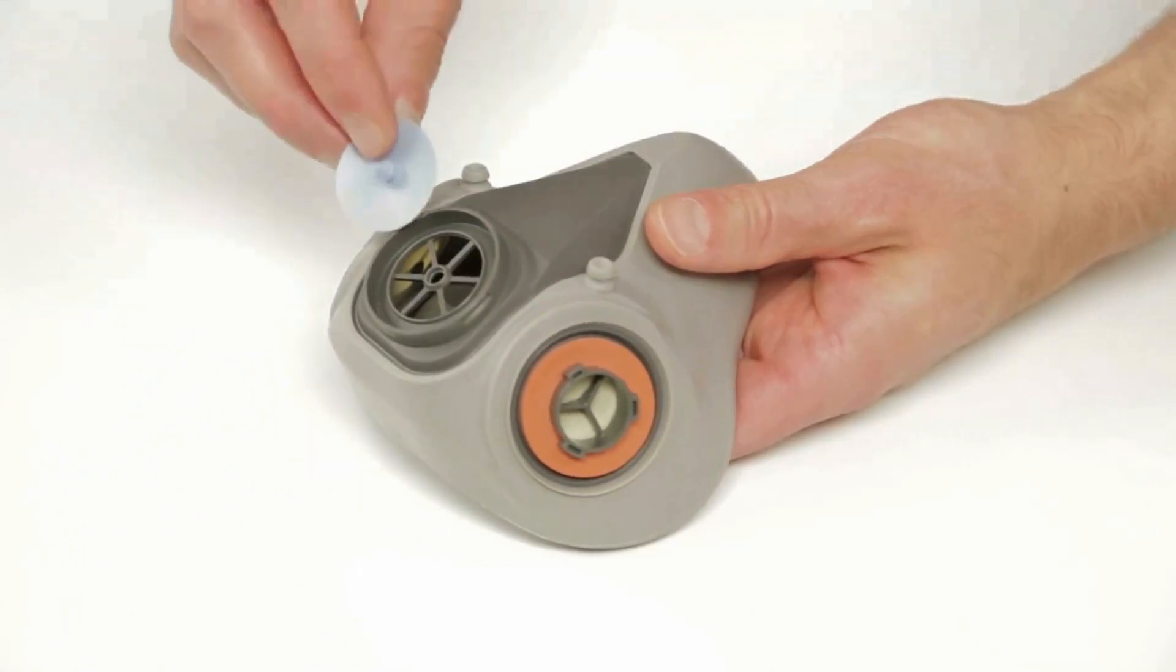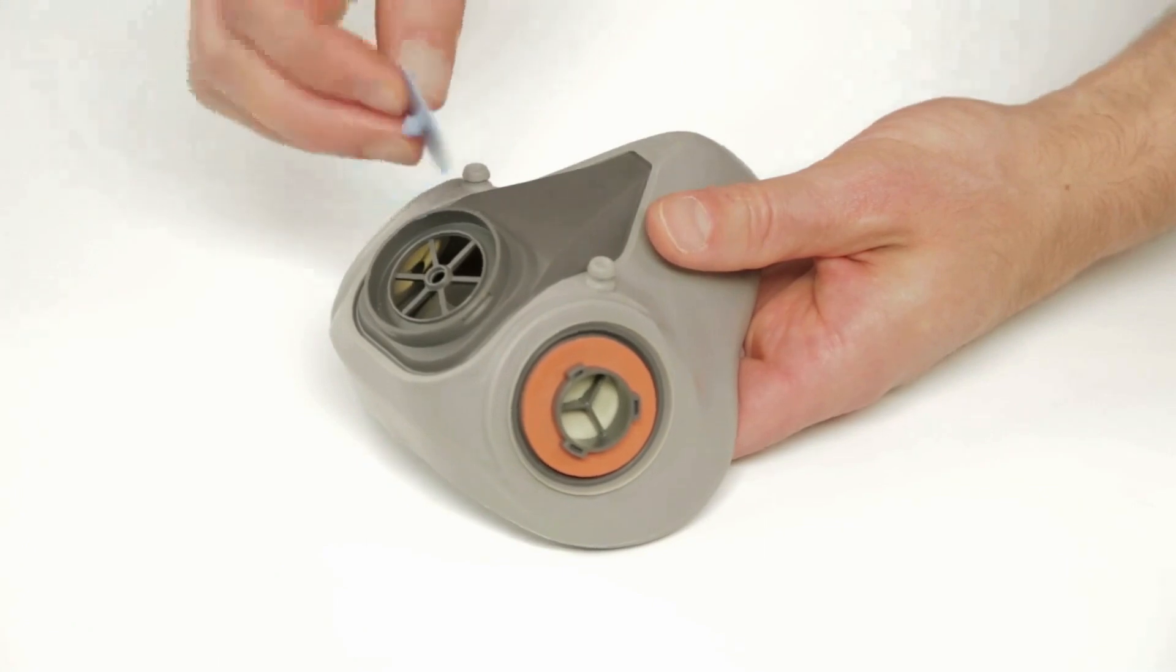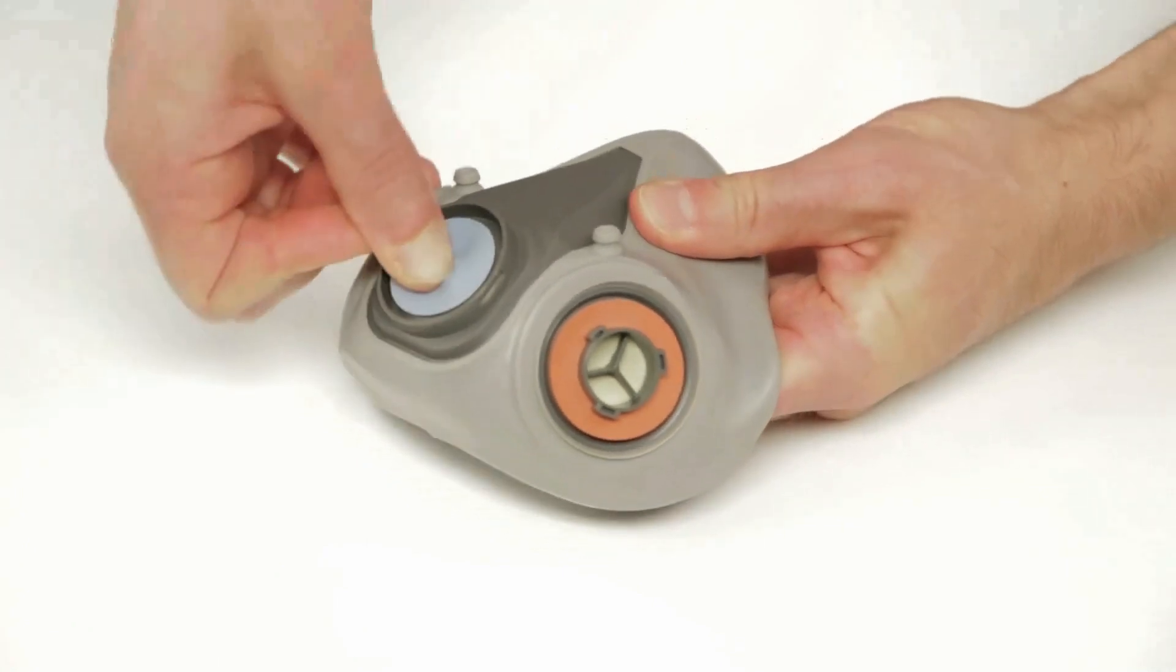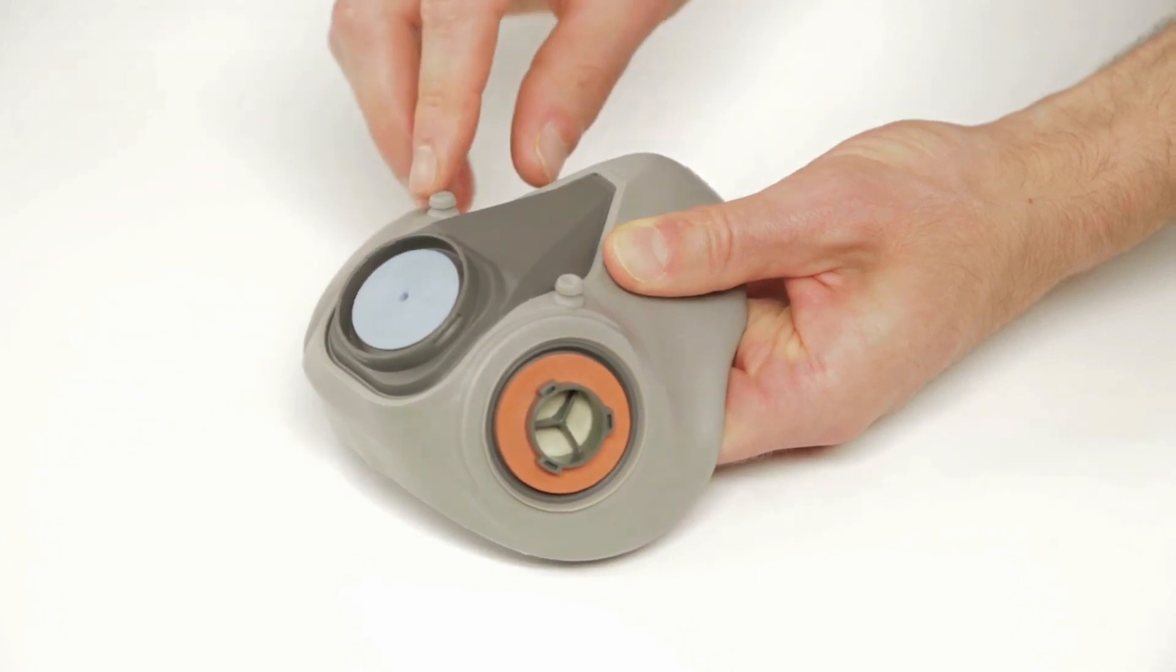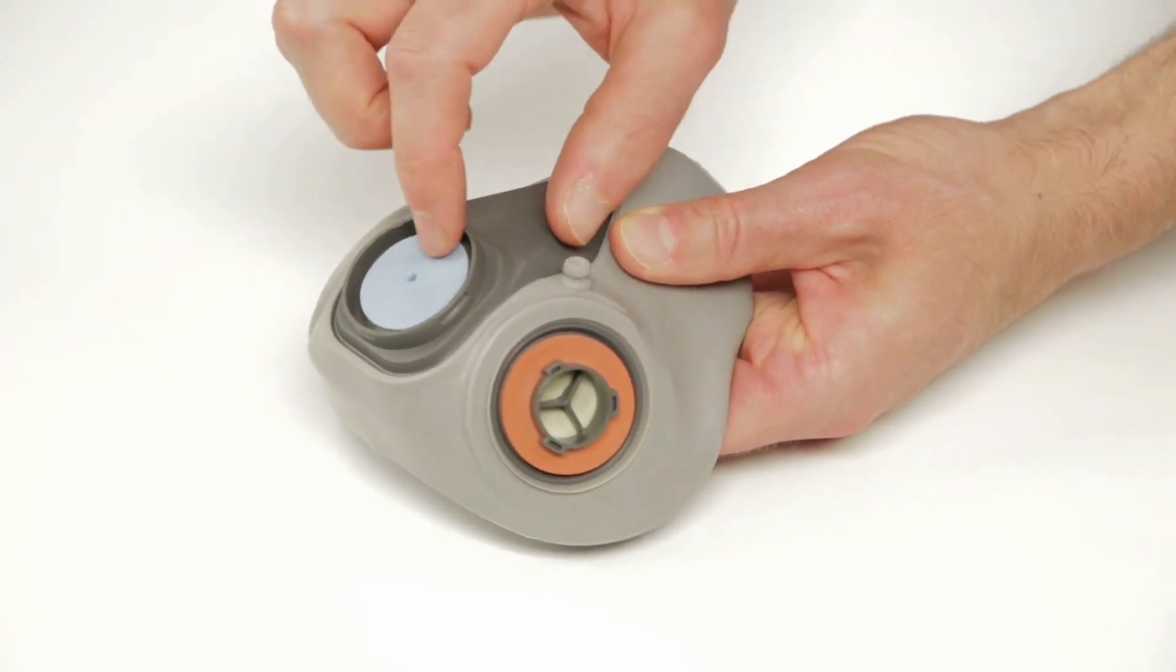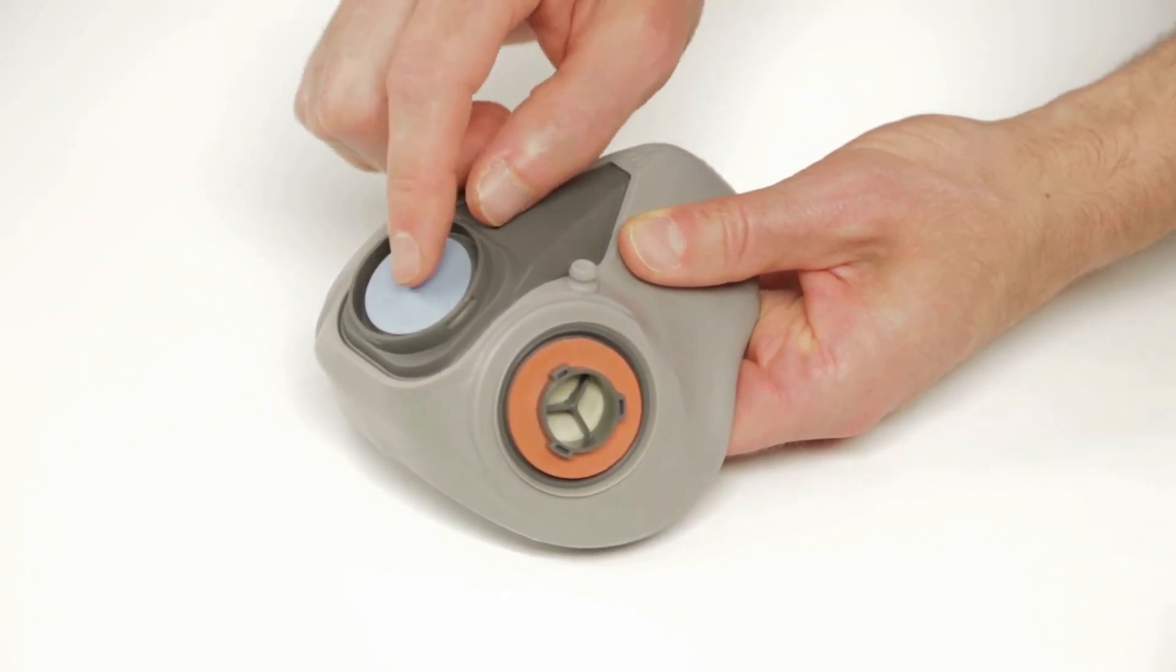To replace the exhalation valve, place the new valve over the exhalation port. Insert the stem into the center hole and press firmly on the valve. Make certain the valve is fully seated and spins freely.